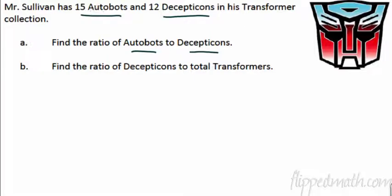And we have 12 Decepticons in his Transformer collection. Find the ratio of Autobots to Decepticons. All right, well, that should be easy enough. What we're going to do, we're going to actually write out the words to help us. This is important as we do our ratios. I'm going to write out, let's put a right here. All right, so we need Autobots. Write that out. Two Decepticons. Decepticons. Okay, it's going to equal what?